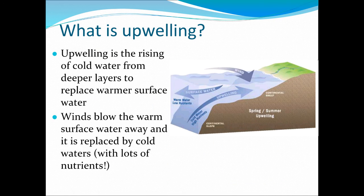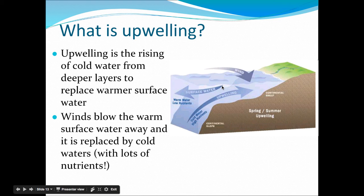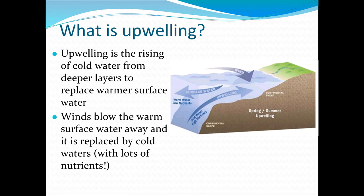Our last topic today is upwelling. This will become very important when we talk about climate patterns. Upwelling is the rising of cold water. Cold water doesn't naturally like to rise, so this is where surface currents become important. Wind patterns push warm surface water away, creating a space, and the cold water underneath rises up to take that space. This is important because cold water has lots of nutrients — it is nutrient dense. It is very important for ecosystems that upwelling occurs.